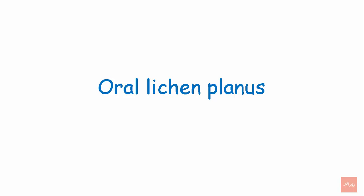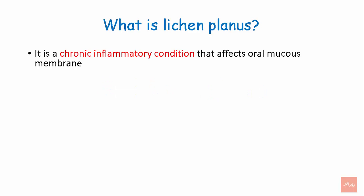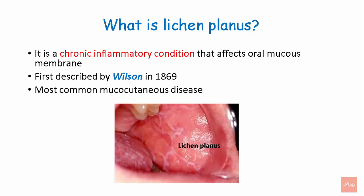Welcome back to MediClass. Oral Lichen Planus is a chronic inflammatory condition that affects oral mucous membrane. It was first described by Wilson in 1869 and it is the most common mucocutaneous disease.